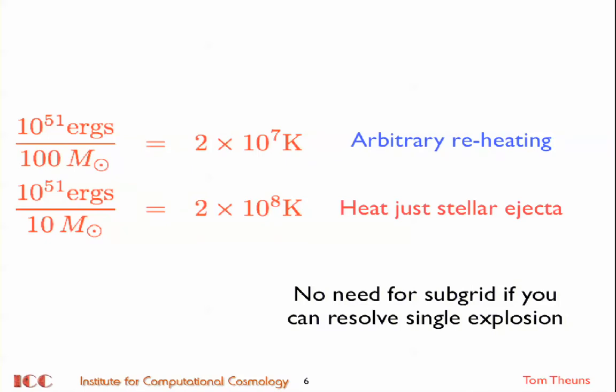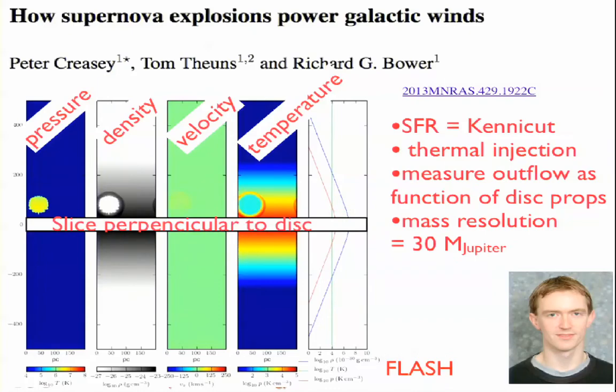But actually, you may say, what I should do is put my 10 to the 51 ergs into 10 solar masses of stars, because that is the mass of the supernova ejecta for, say, a 25 solar mass supernova. Note the huge difference in temperature of the ejecta. Now, if you could resolve these supernova explosions, you wouldn't need subgrid physics. So why can't we try to do simulations where every supernova is indeed a single explosion? This is the ejection temperature.